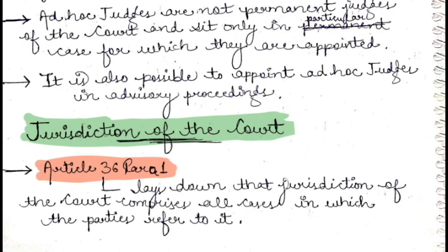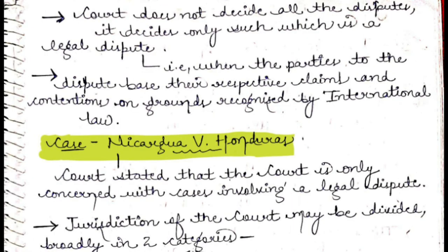Next is the jurisdiction of the court. Article 36.1 lays down that the jurisdiction of the court comprises all cases which the parties refer to it. However, the court does not decide all disputes — it will decide only those which are legal disputes.